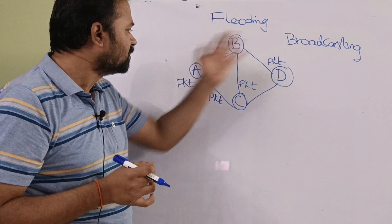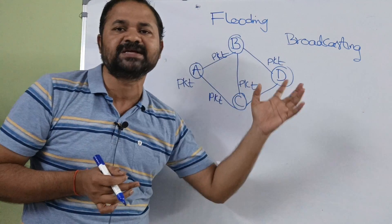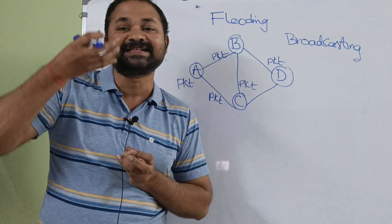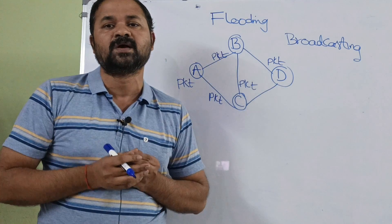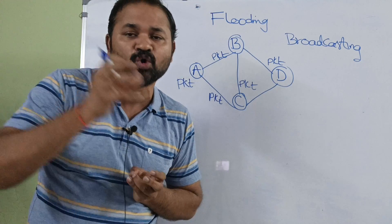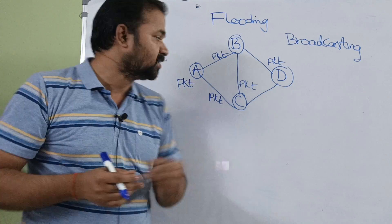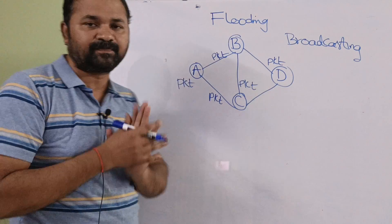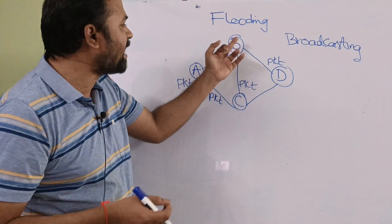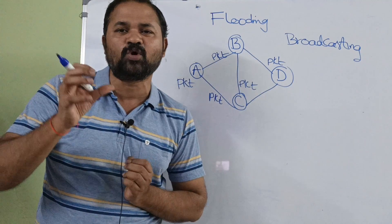C will also transmit the packet to its corresponding neighboring routers. To restate: flooding means transmitting the packet to all its neighboring routers except the source router from which the packet arrived. So if B received the packet from A, B forwards it to C and D, not back to A.